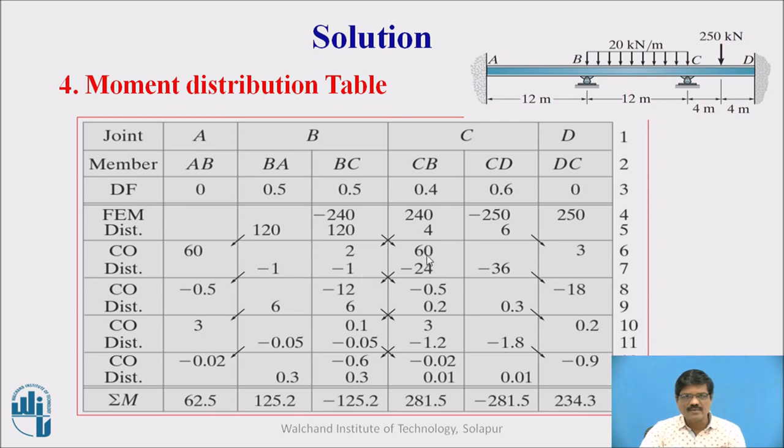Then plus 60 is unbalanced moment. So minus 60 we have to apply. Out of that minus 60, 0.4% is transferred here, 0.6% is transferred here. So this is how we distribute it.